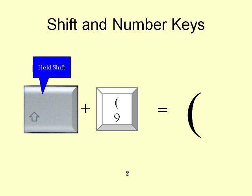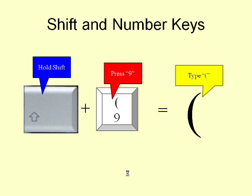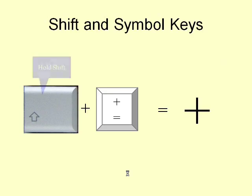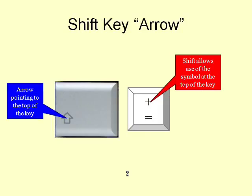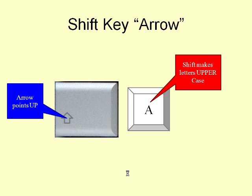If you hold down the shift key while pressing a number key, the symbol written above the number will be typed. If you press a symbol key while holding down the shift key, the symbol written on the upper half of the key will be typed. The shift key is printed with a small up arrow to remind you that it lets you use the symbols written on the top half of the keys and that it converts to uppercase.